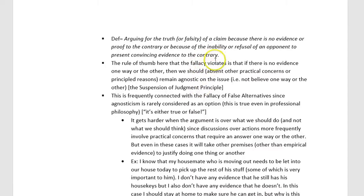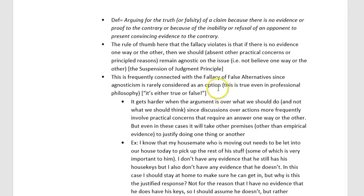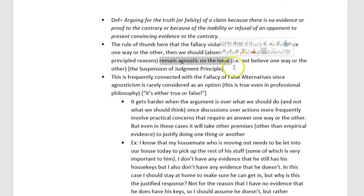The problem is that having no evidence on an issue works equally for both sides of a debate. The fact that there's no evidence against it or for it means both sides could use the same argument from ignorance — so they kind of offset. This also connects to the suspension of judgment principle: there's another option on the table, and it's better to remain agnostic on the issue. If there's no evidence one way or the other, we don't have reason to prefer one belief over the other.